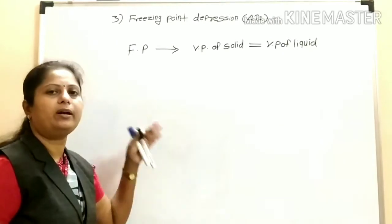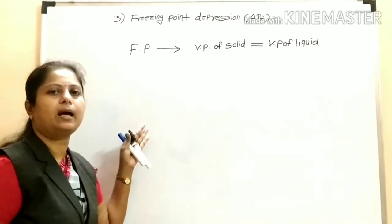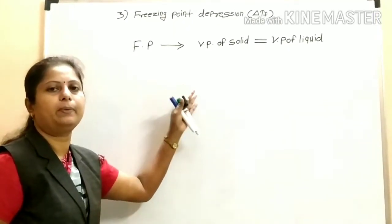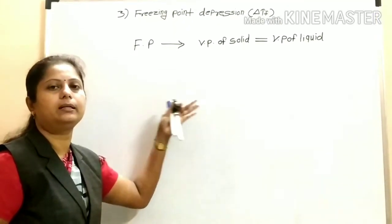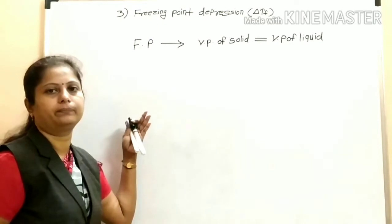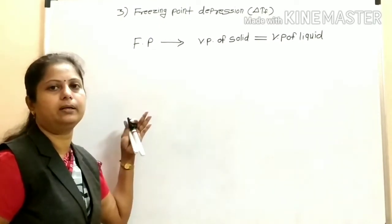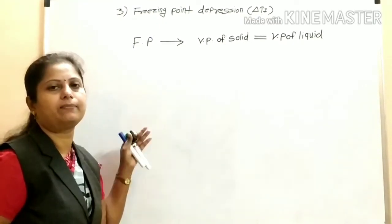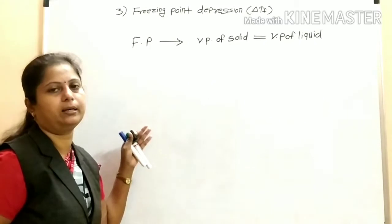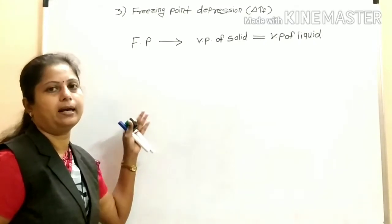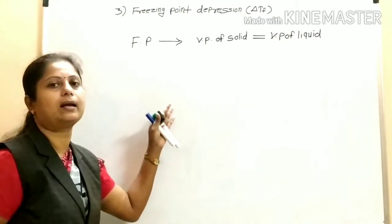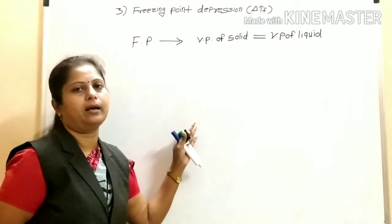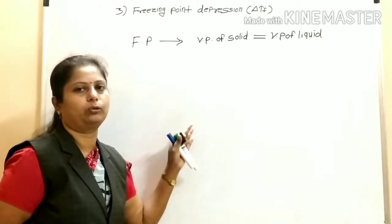When a solute is added, the vapor pressure of the liquid decreases or is depressed, which means the freezing point is also depressed. This can be shown graphically — this is very important.